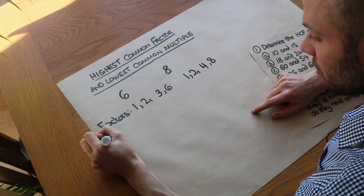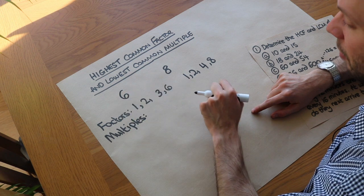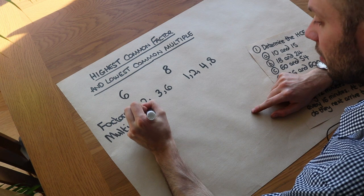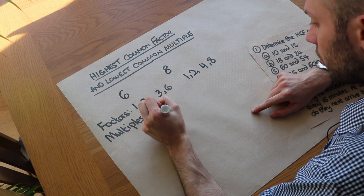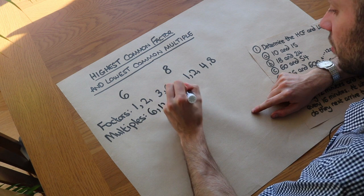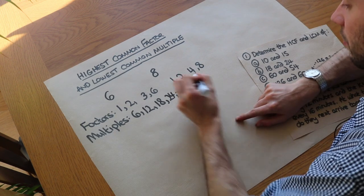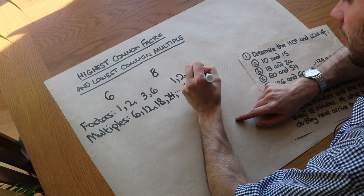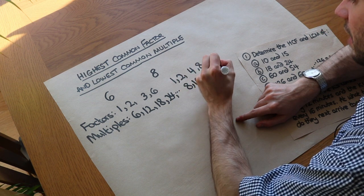What about multiples? A multiple of 6 is just a number that 6 goes into — effectively the 6 times table. So 6 would be a multiple of 6 because it's 1 times 6, then 2 times 6, 3 times 6, 4 times 6, etc. With 8 we've got 1 times 8, 2 times 8, 3 times 8, 4 times 8, etc.